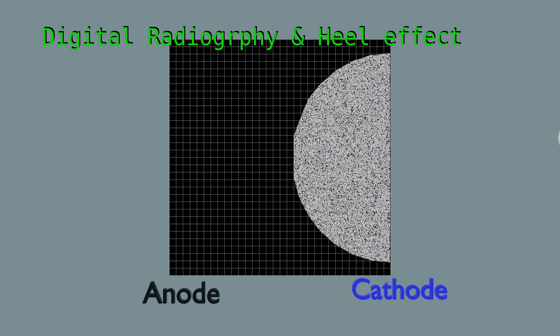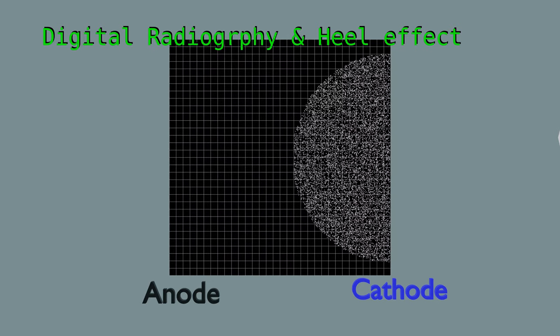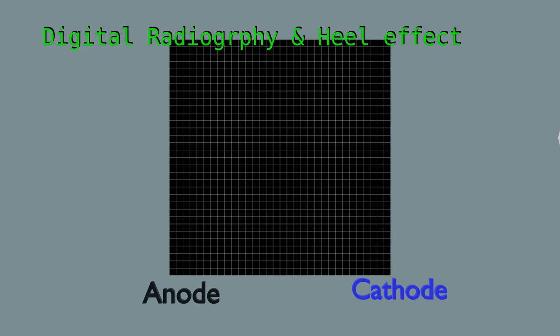With use of computer algorithms, the individual pixel value of a DR detector can be manipulated to produce a final image for a uniform beam. Flat fielding image processing methods are employed to make such corrections.